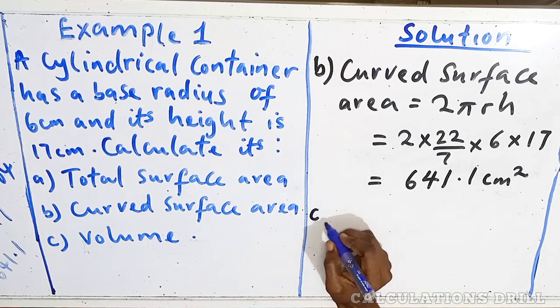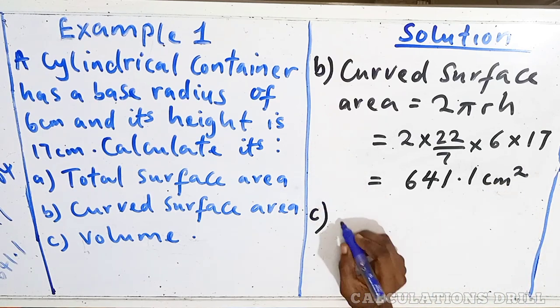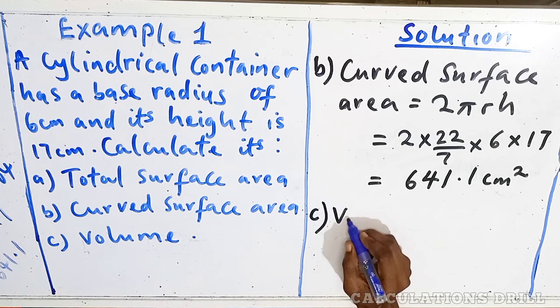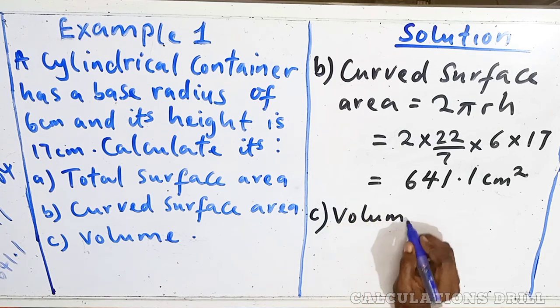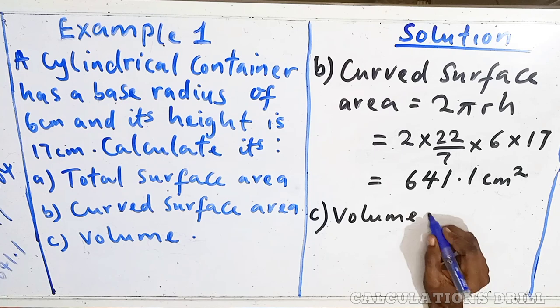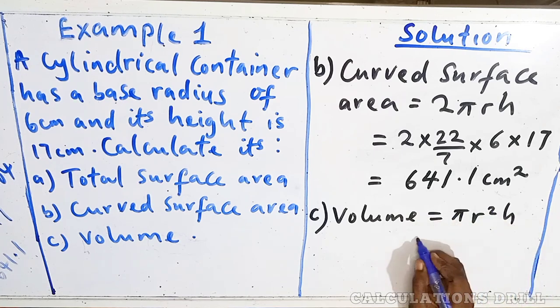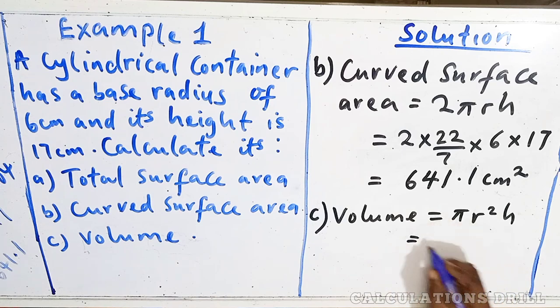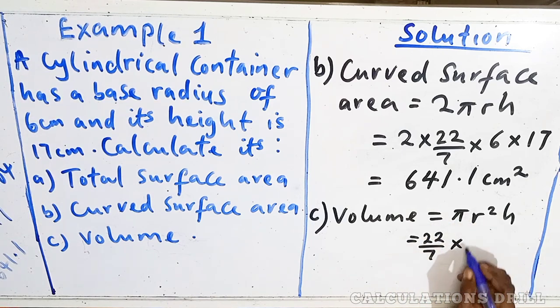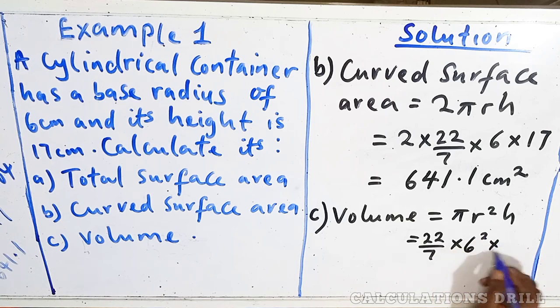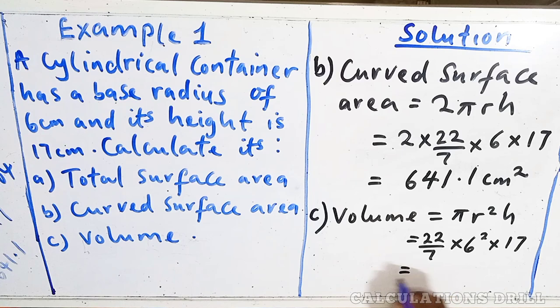The last, which is the volume. Volume of a cylinder is equal to πr²h. Take note of that. Our pi is 22/7. The radius is 6. That will give us 6² now based on the formula. Then, times the height equals to 1,923.4 cm³.